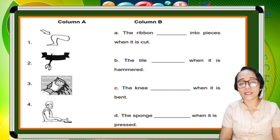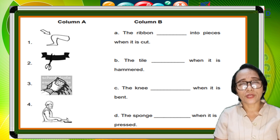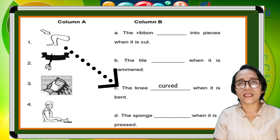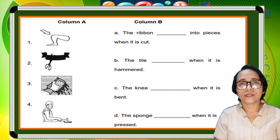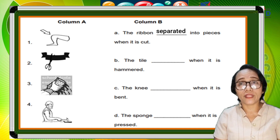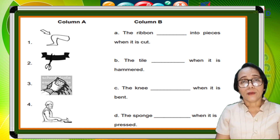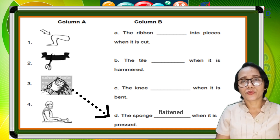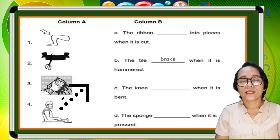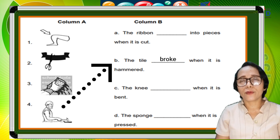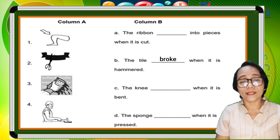Supply the blank with a change in the material. What is your answer in number 1? Let's try letter C — the knee curved when it is bent. Number 2 — that is letter A. The ribbon separates into pieces when it is cut. Number 3, let's try D — the sponge flattened when it is pressed. And the last one, number 4, letter B — the tile grew when it is hammered.